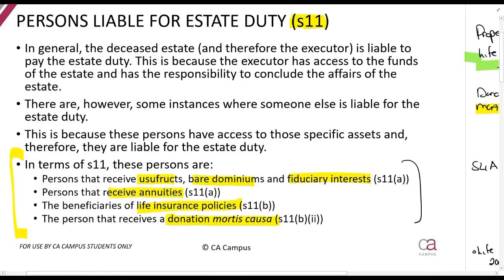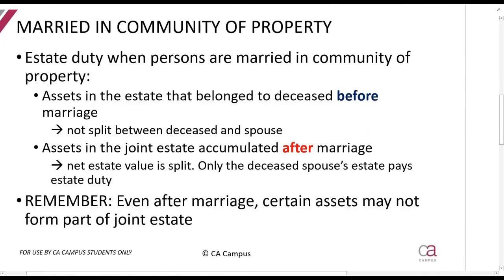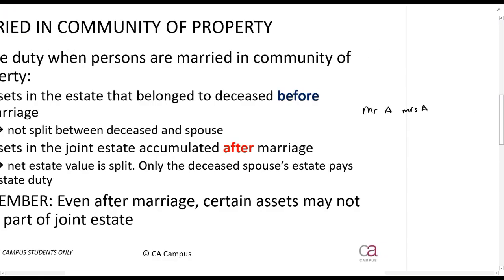Then if you are married in community of property: Mr. A and Mrs. A are married in community of property, meaning the assets are considered to belong to both of them. If Mr. A passes away, the assets that belong to him — which are the same assets that belong to Mrs. A — must be subject to estate duty. But it doesn't make sense to tax this one person on the full value of the asset.